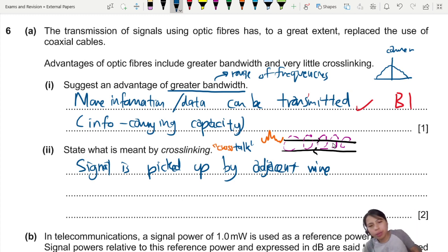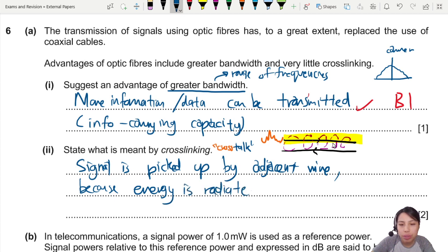What else do we need to mention here? Maybe we want to mention why is the signal picked up. Well, because power is radiated, or energy is radiated. So we can say because energy is radiated through the electromagnetic fields and all that, it radiates out and affects all the wires nearby. Here is two marks, you get a B1 here and another B1 right here.